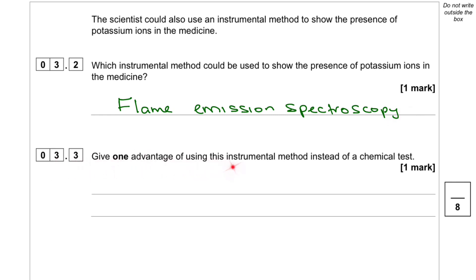Question 3.3: Give one advantage of using this instrumental method instead of a chemical test. 1. It's more accurate. 2. More sensitive. 3. Faster. 4. It can determine the concentration of ion present in the sample. Any one of these is fine.